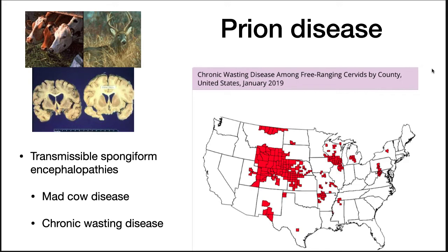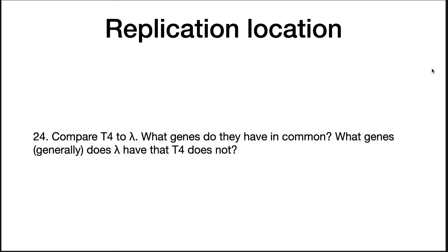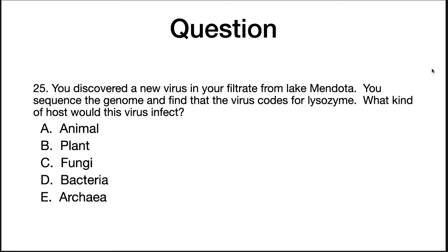We'll have more to say about this later in the semester. Let's check your comprehension. A new bacteriophage is discovered that contains double-stranded RNA for its genome — where does it replicate? Compare T4 to Lambda: what genes do they have in common, and what genes generally does Lambda have that T4 does not? You discover a new virus in your filtrate from Lake Mendota; you sequence the genome and find the virus codes for lysozyme. What kind of host would this virus infect?